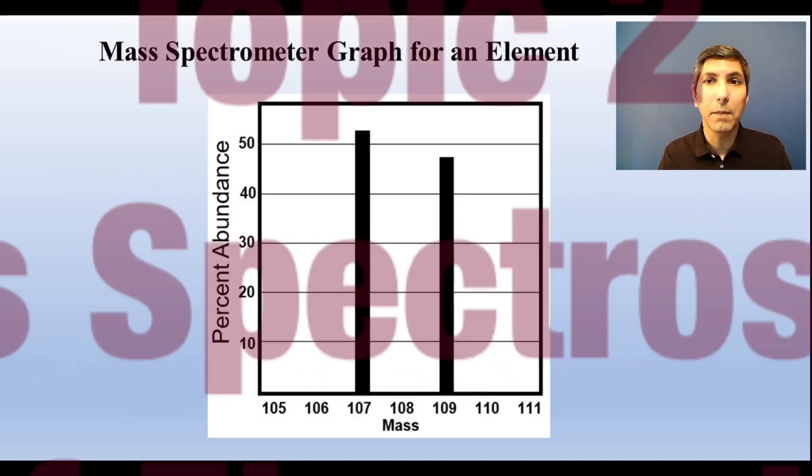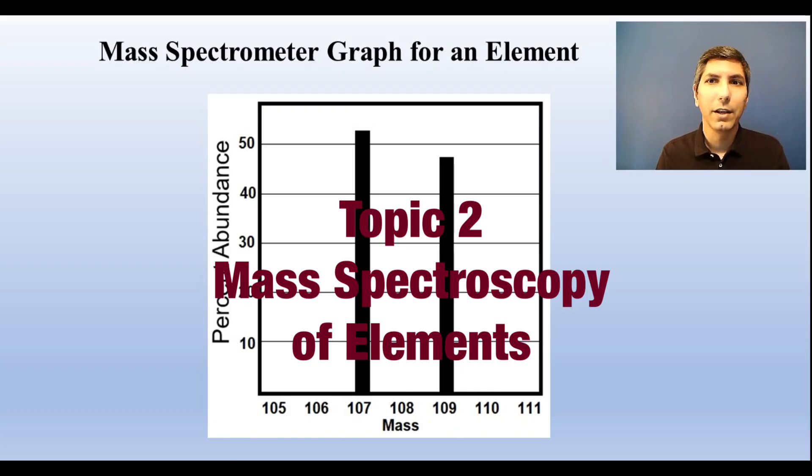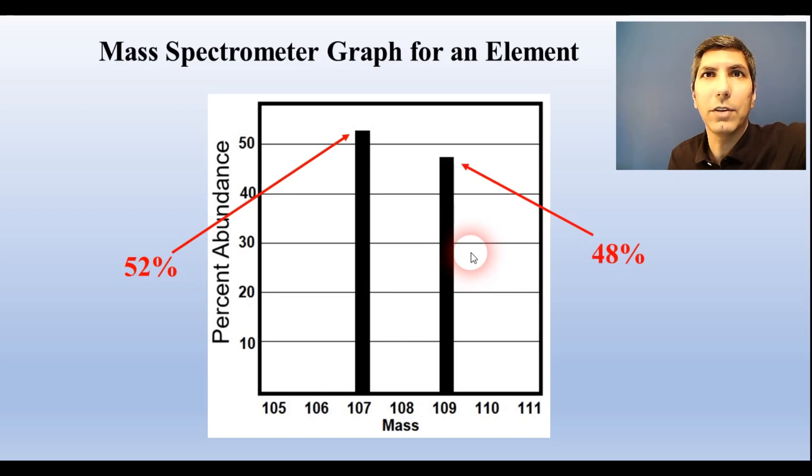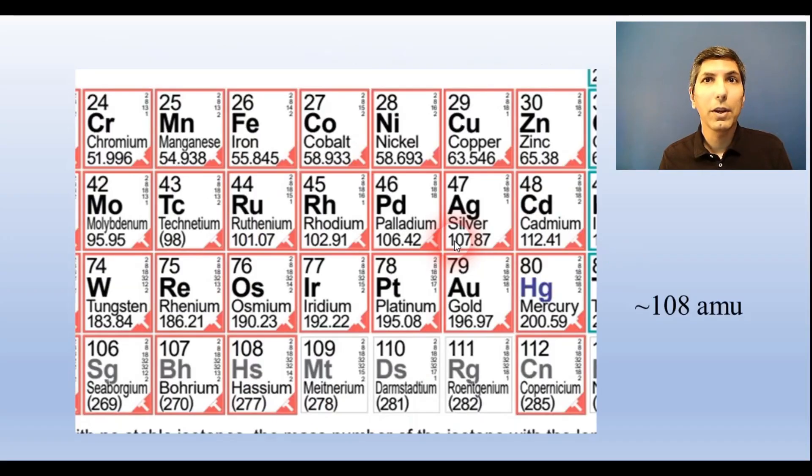Another skill is being able to interpret a mass spectrometer graph for an element. For example, a graph like this shows the relative abundance of the isotopes of the element that's being analyzed. So we have two isotopes. One of them has a mass of 107 atomic mass units, the other one has a mass of 109 atomic mass units. The 107 isotope is more abundant. About 52 percent of all the atoms of this element have a mass of 107, while about 48 percent have a mass of 109. We can do some quick math and estimate that the average atomic mass of this element would be right around 108 amu, maybe a tad less than that. So we can look at the periodic table and confidently say that this is the graph for silver. You need to be able to do that for any elements mass spec graph that you might be given on the exam.